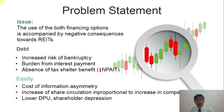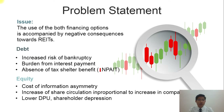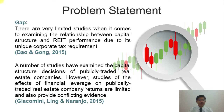There is also absence of a tax shelter since it is a tax exempt entity. Looking at equity, there is a cost of information asymmetry where investors perceive that the equity is currently overvalued, and there is also an increase in share circulation disproportional to the increase in company revenue. This leads to a lower DPU, causing shareholder depression, sell-offs, and price decreases. There are very limited studies on the relationship between capital structure and REIT performance due to its unique corporate tax requirements.